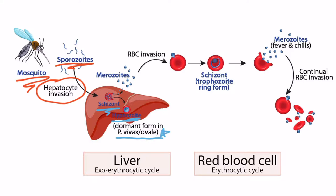Just know that every species, including vivax and ovale, will at some point rupture the hepatocytes, releasing merozoites. Those merozoites go into the bloodstream and then invade red blood cells. Once there, they will again form a schizont, which is the trophozoite ring form. Then the schizont, just as it did with the hepatocyte, will burst and release more merozoites. When these red blood cells burst out these merozoites, the immune system is triggered and the patient will get fever and chills.